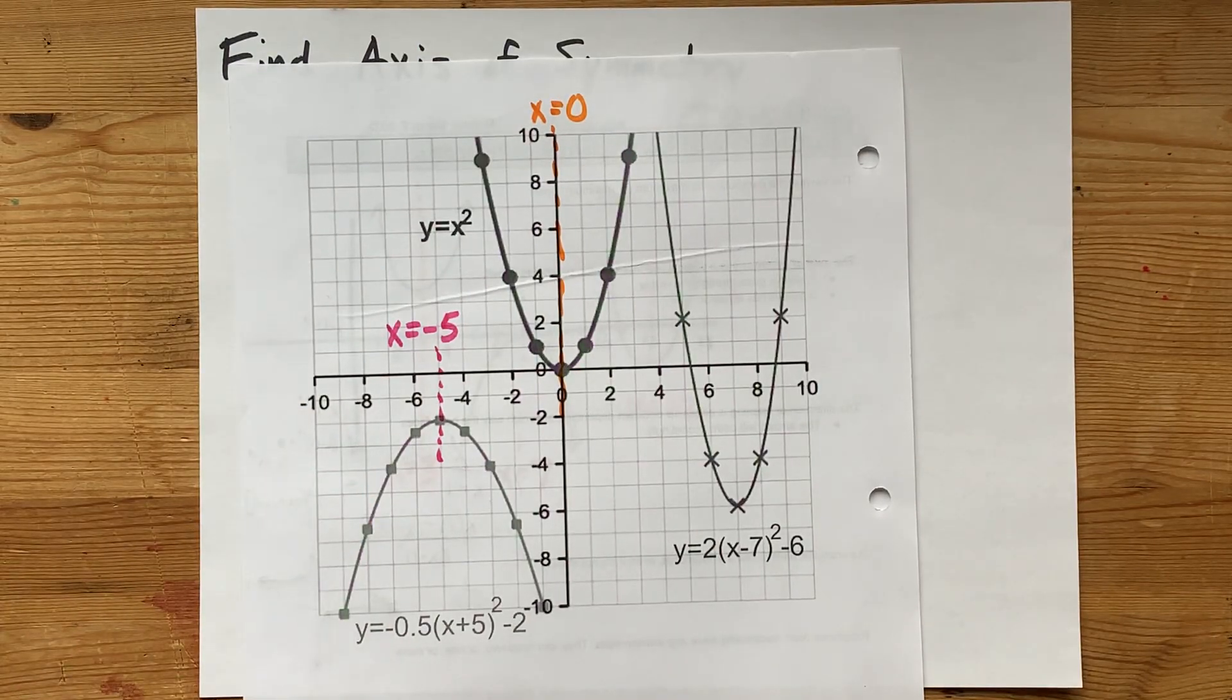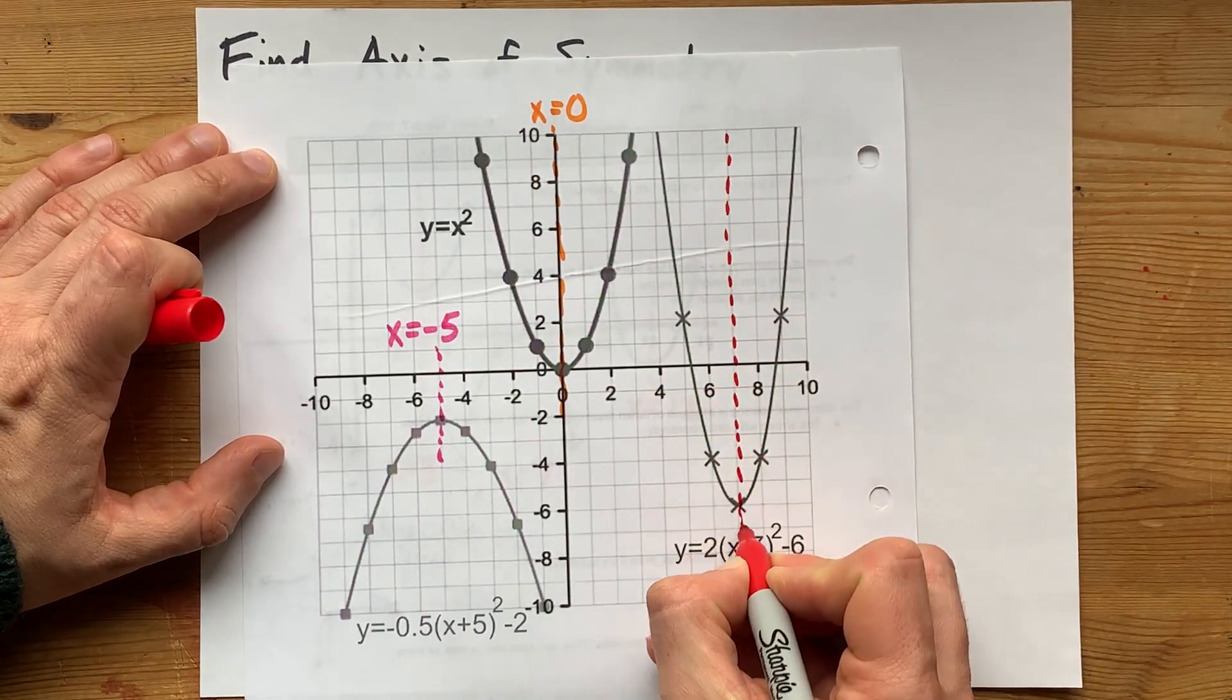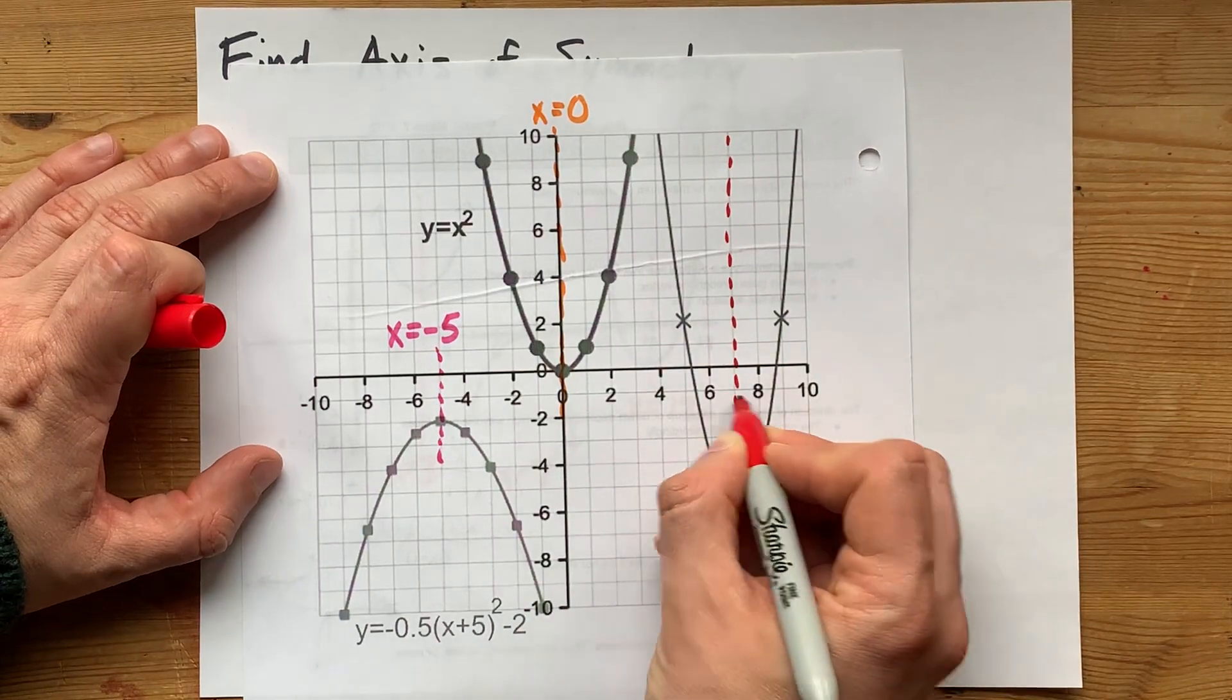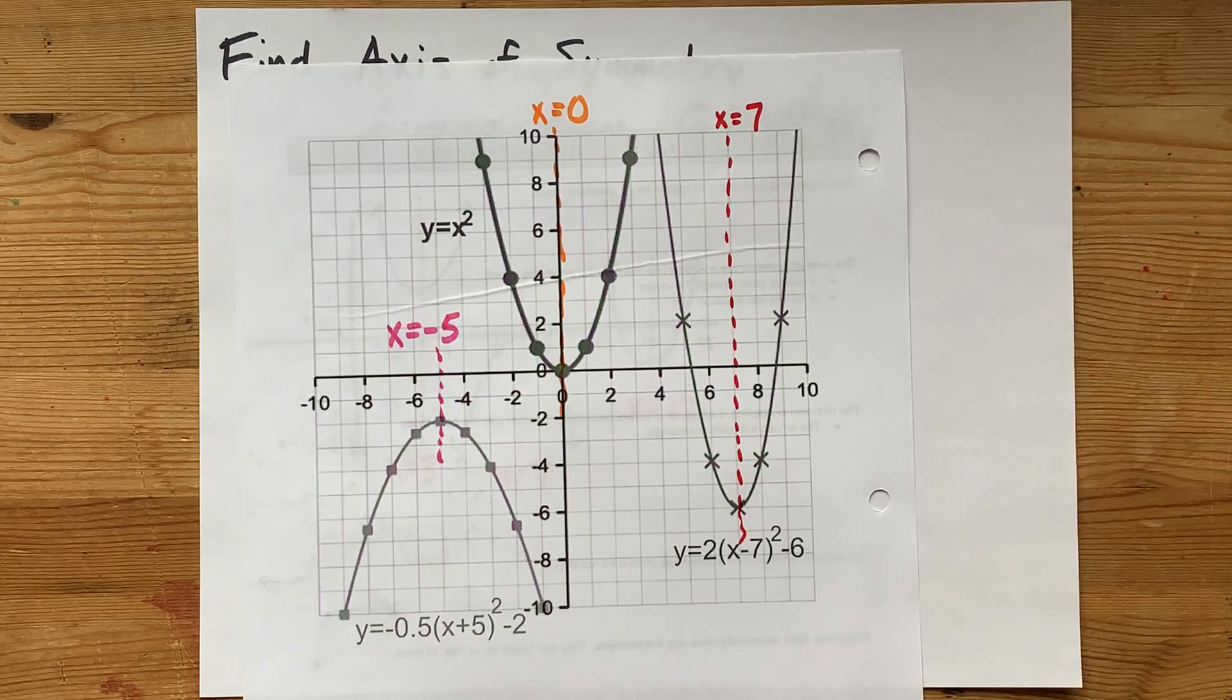One more. Let's do this parabola here where I have little x's for my dots. It clearly gets cut in half right here. That's between 6 and 8. This is just another one that has its axis of symmetry at x equals 7.